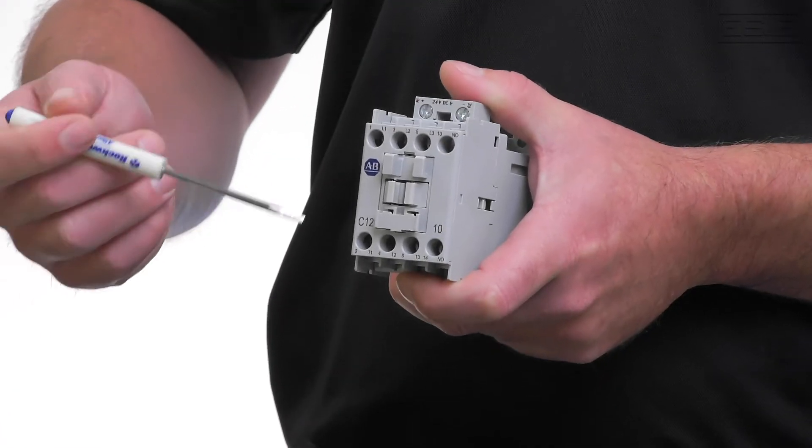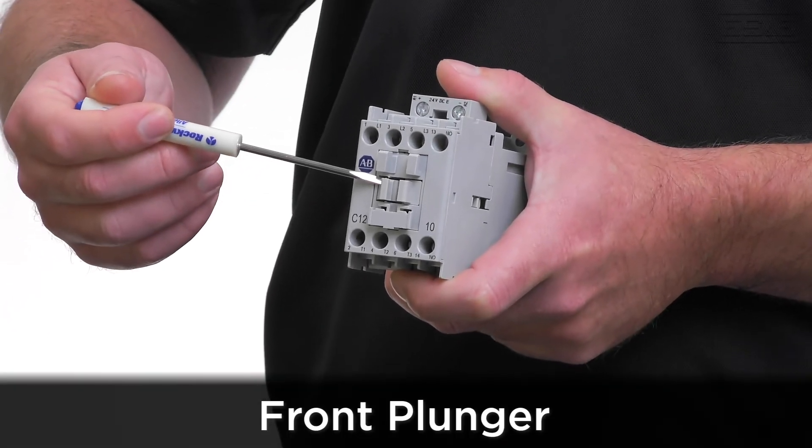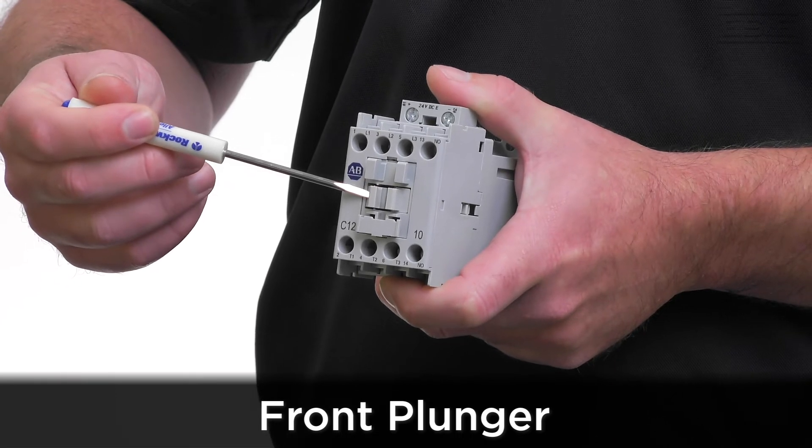First, let's take a quick look at the contactor itself. On the face, we have the plunger that would interface with any front mount auxiliary contacts.